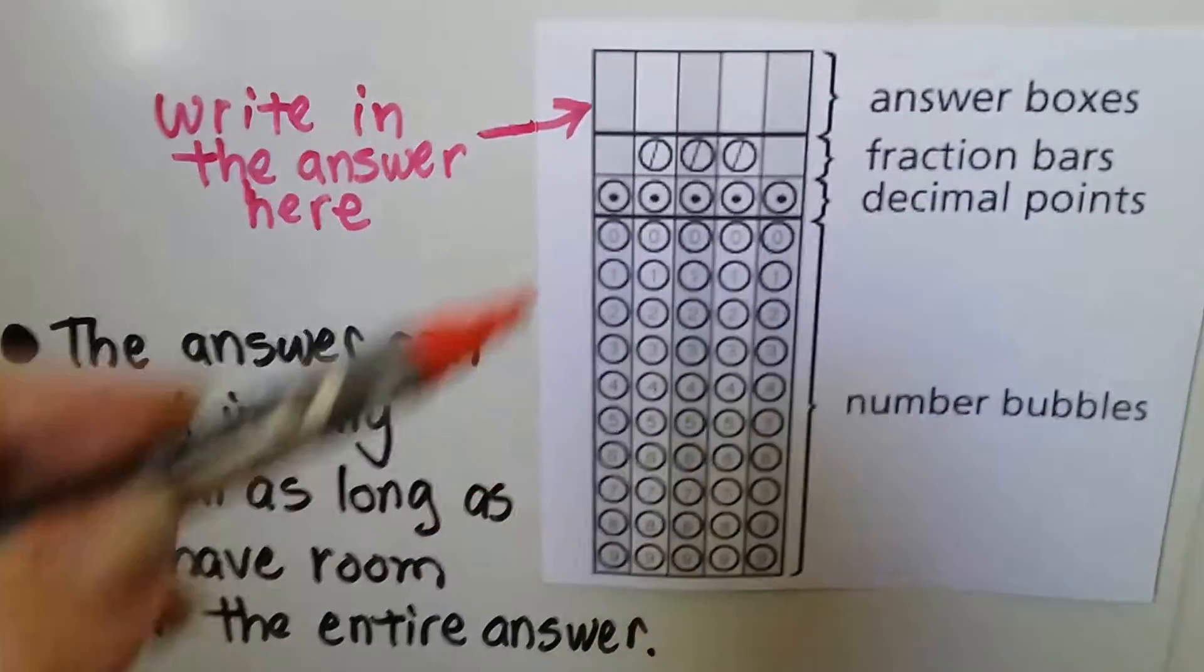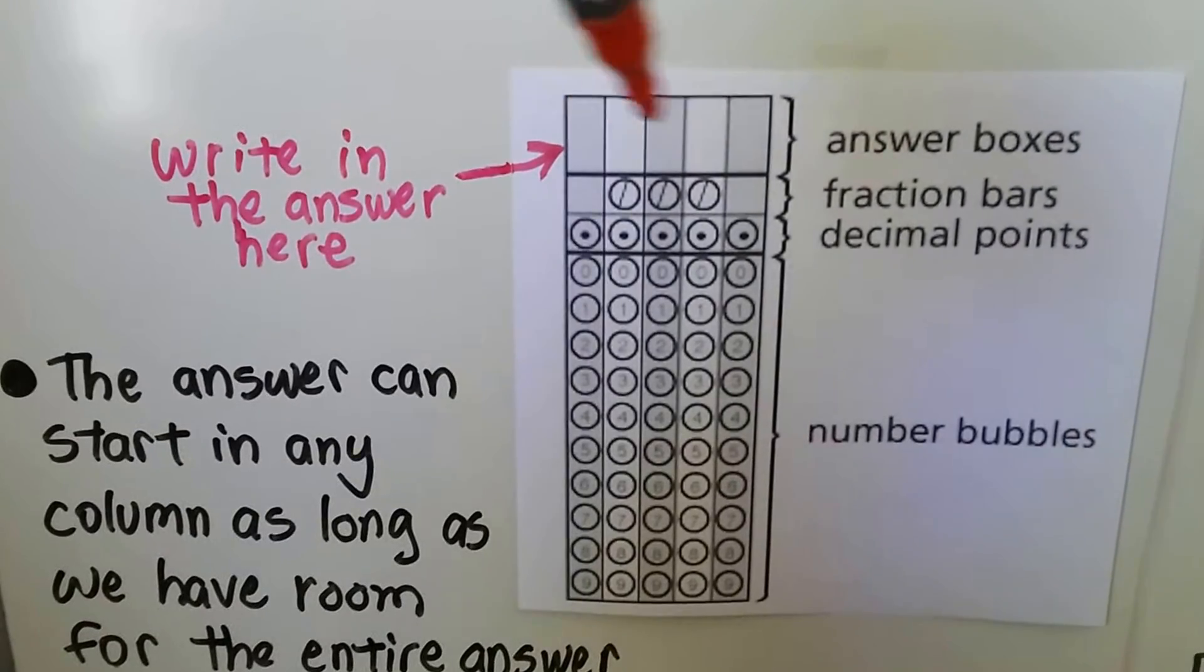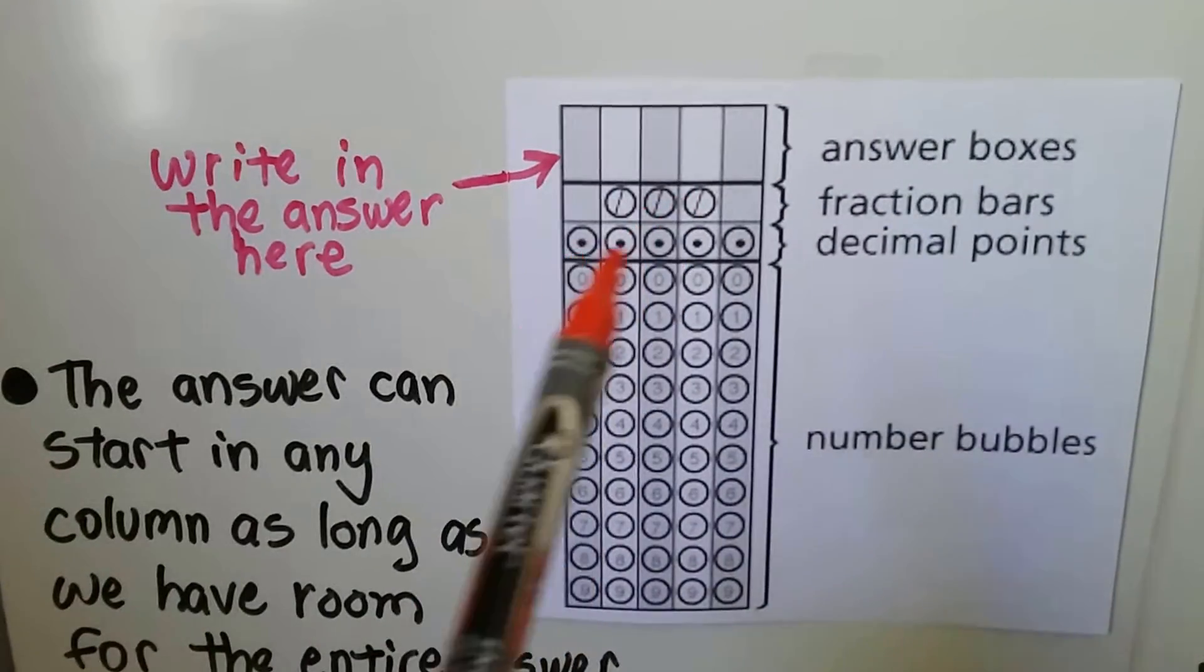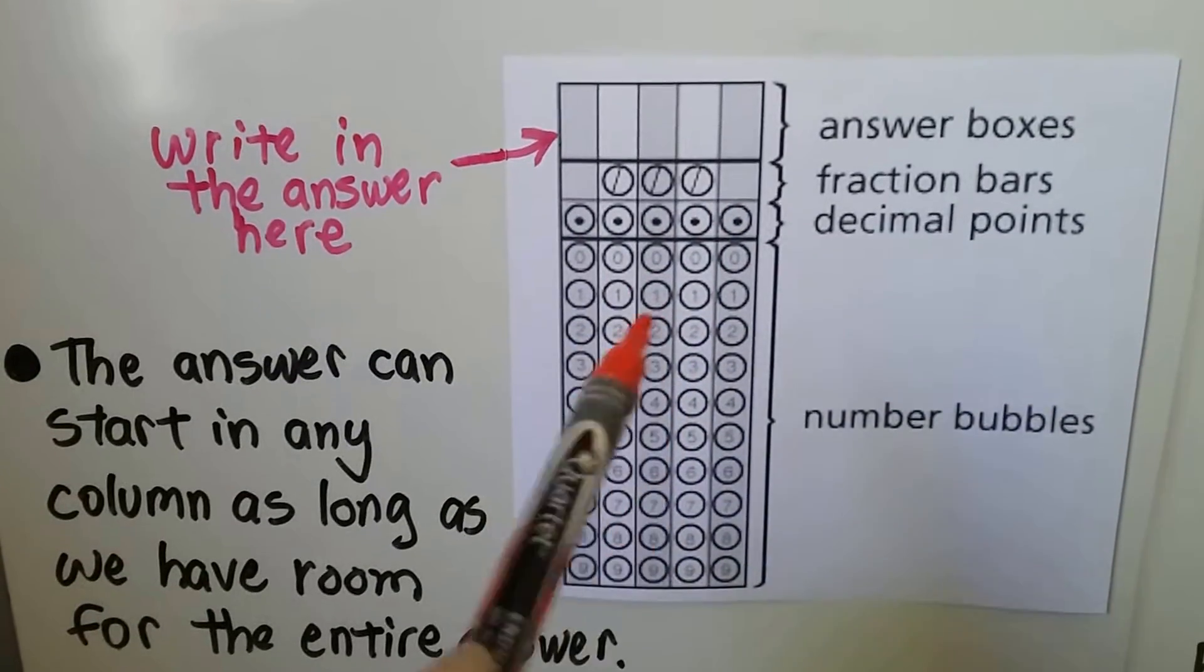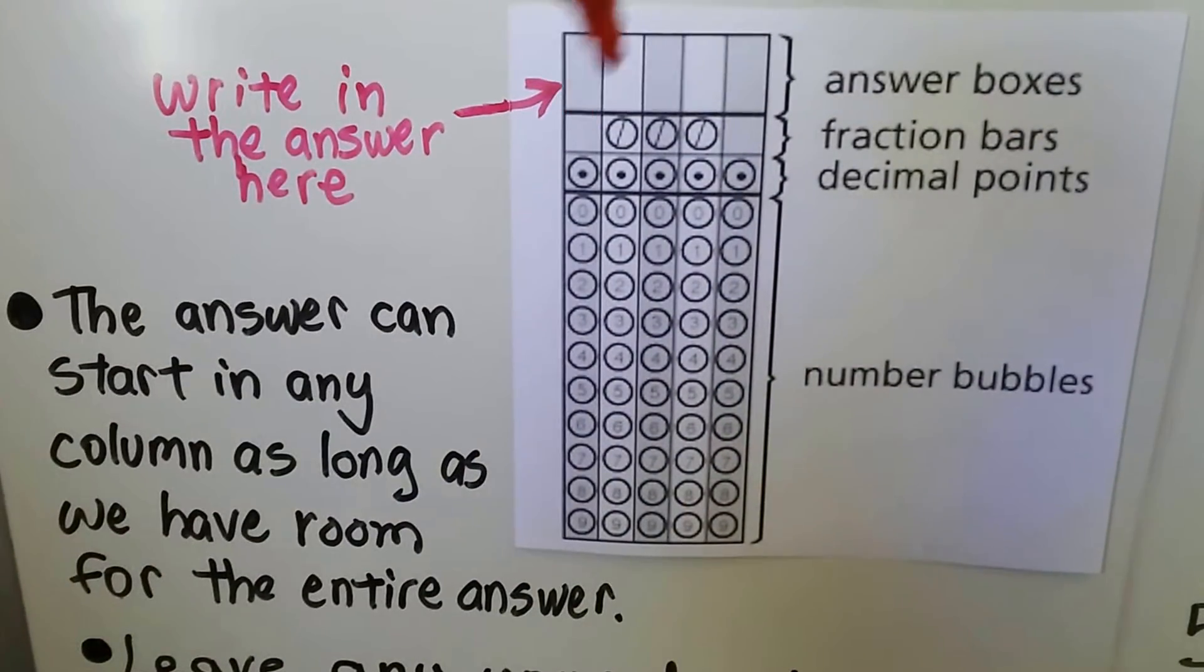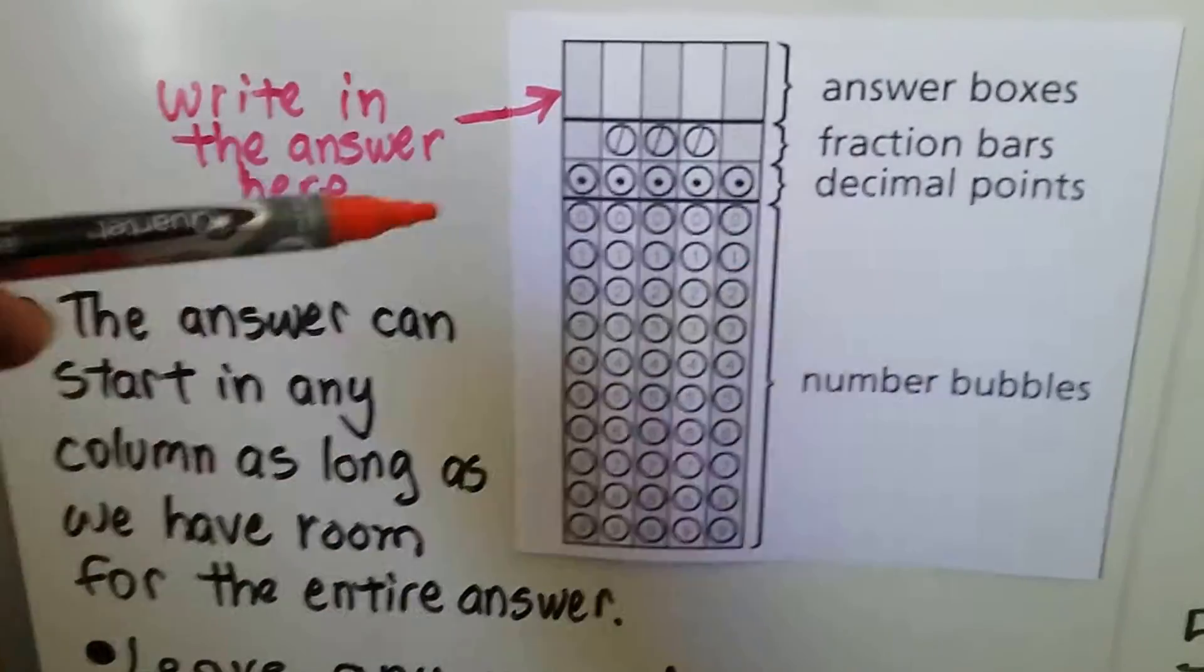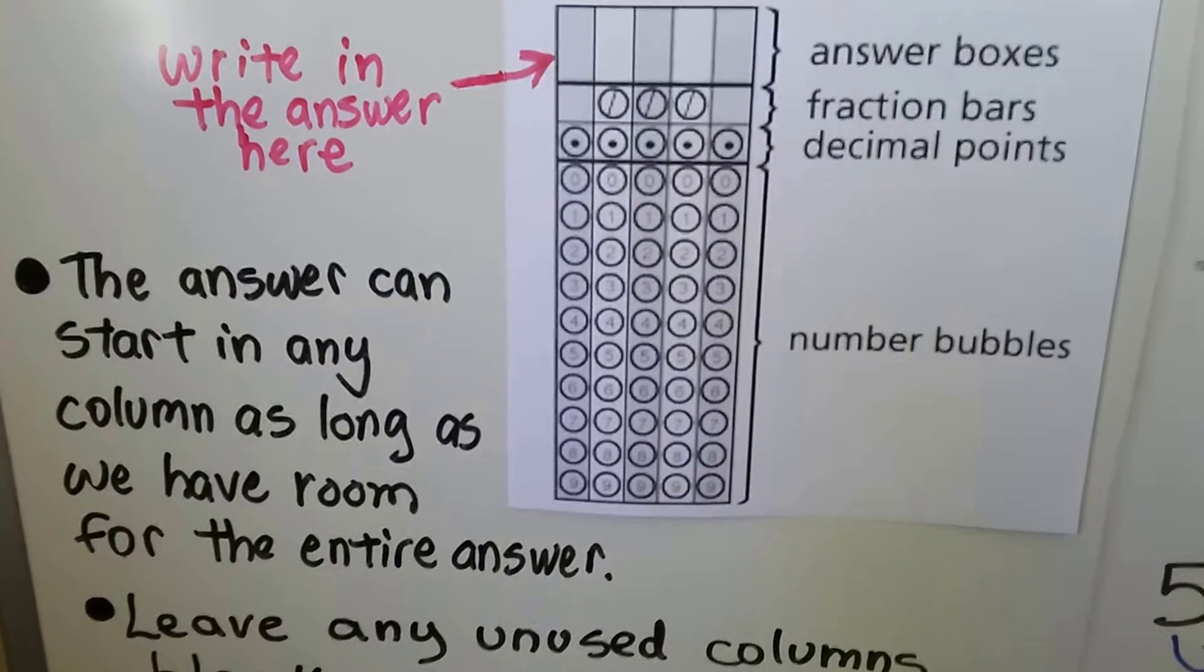This entire thing is going to be for one answer. We write in the fraction up here and these circles are the fraction bars. These are the decimal points and here's the number bubbles where we would fill in the numbers that coincide. And the answer can start in any one of these columns. Remember, columns go up and down, rows go across. So the answer can start in any column as long as we have the room for the entire answer.